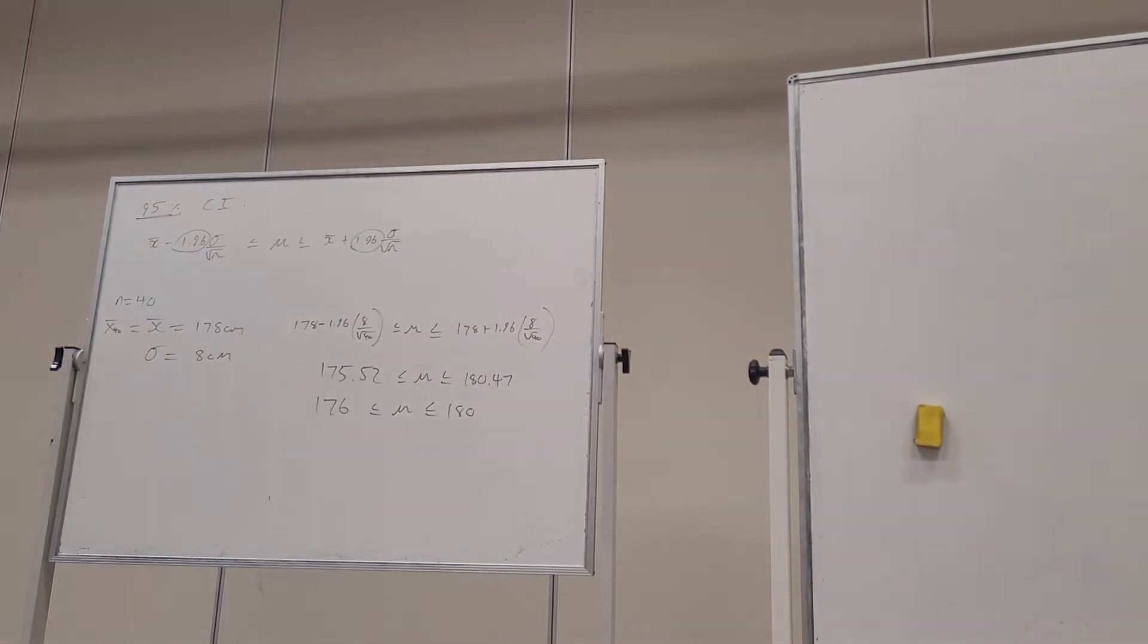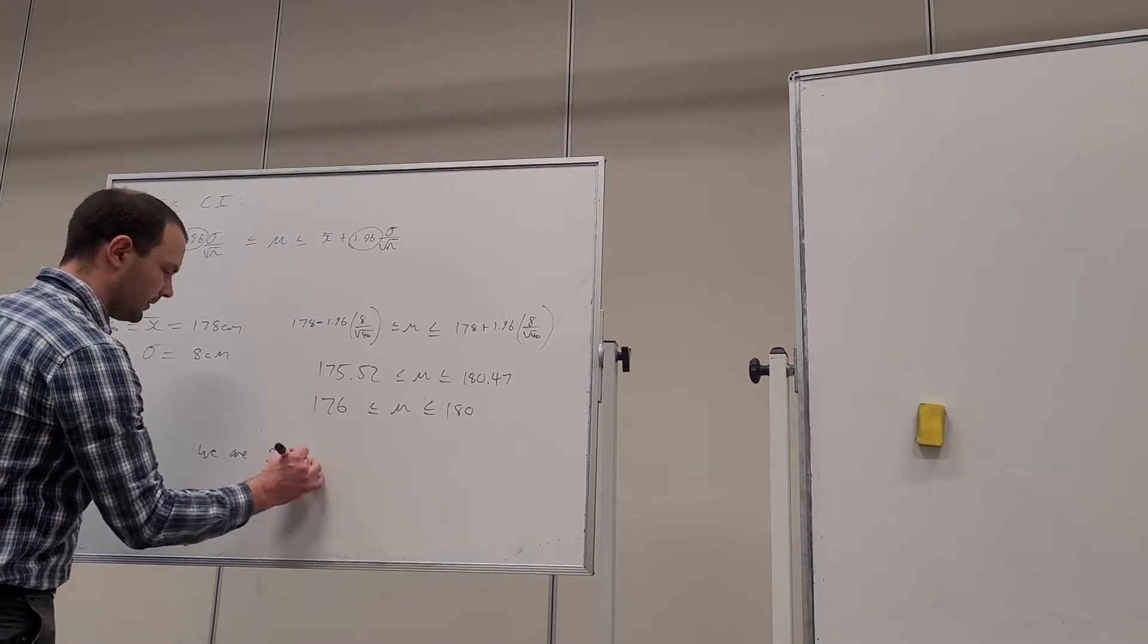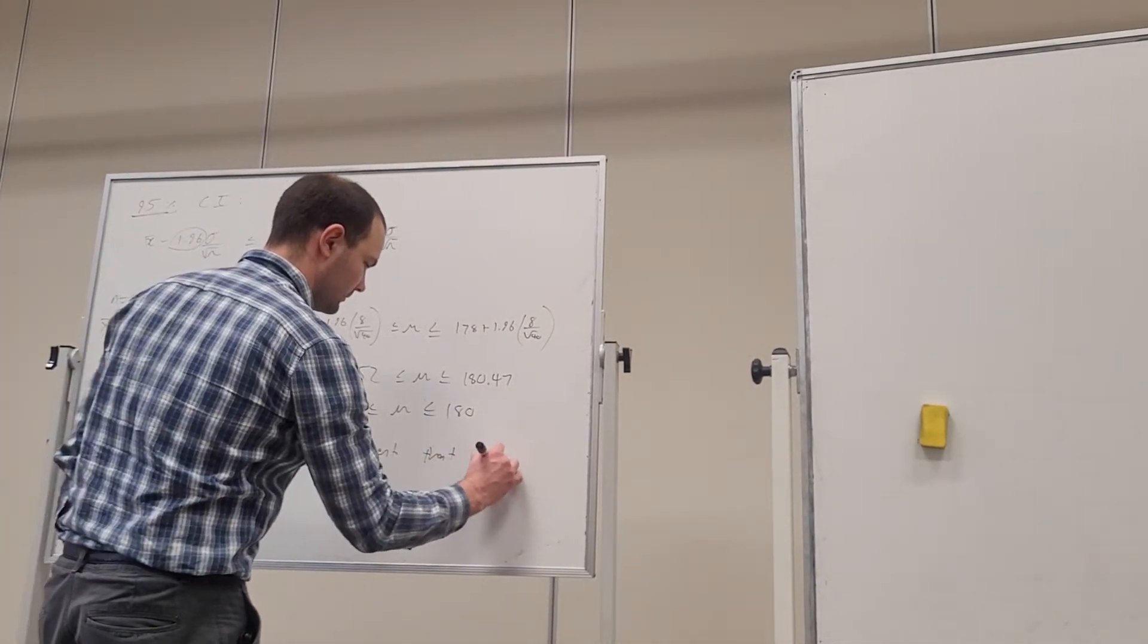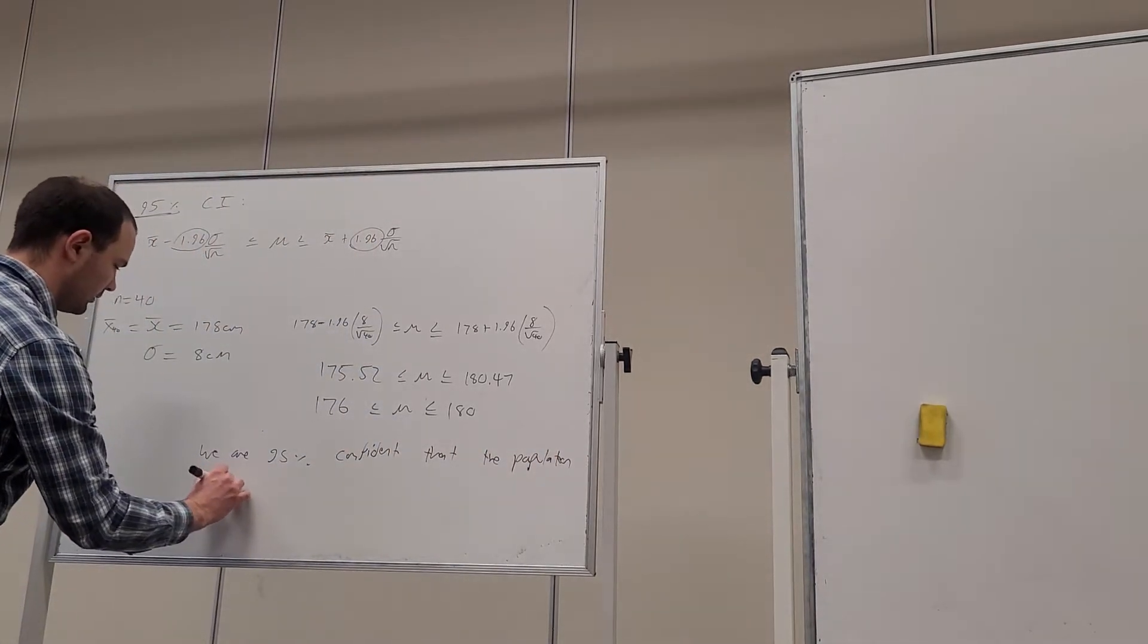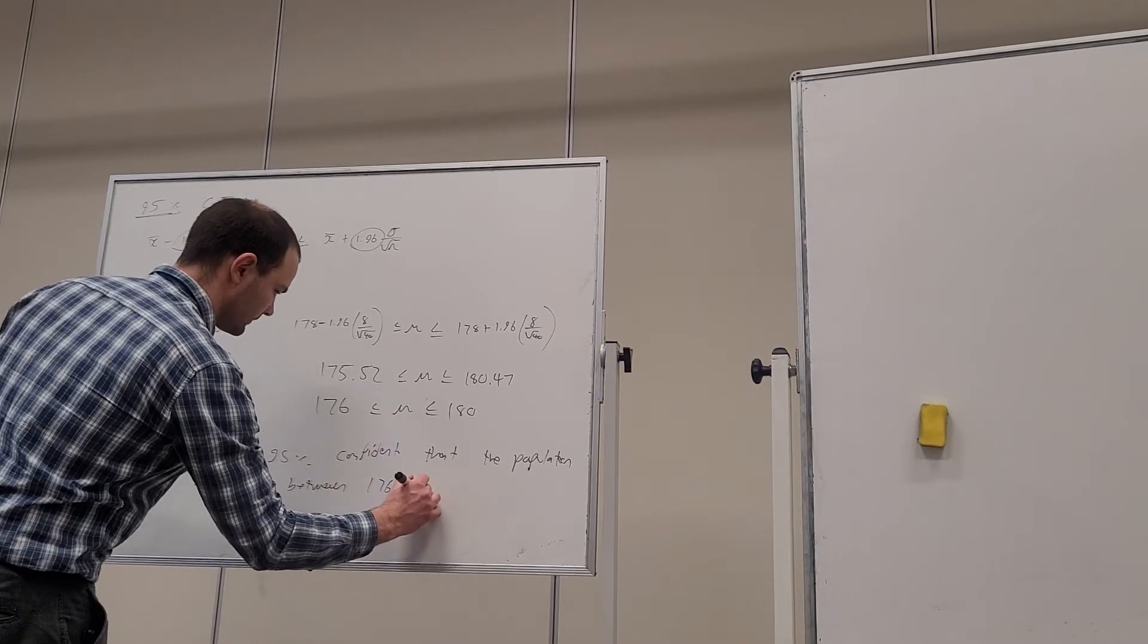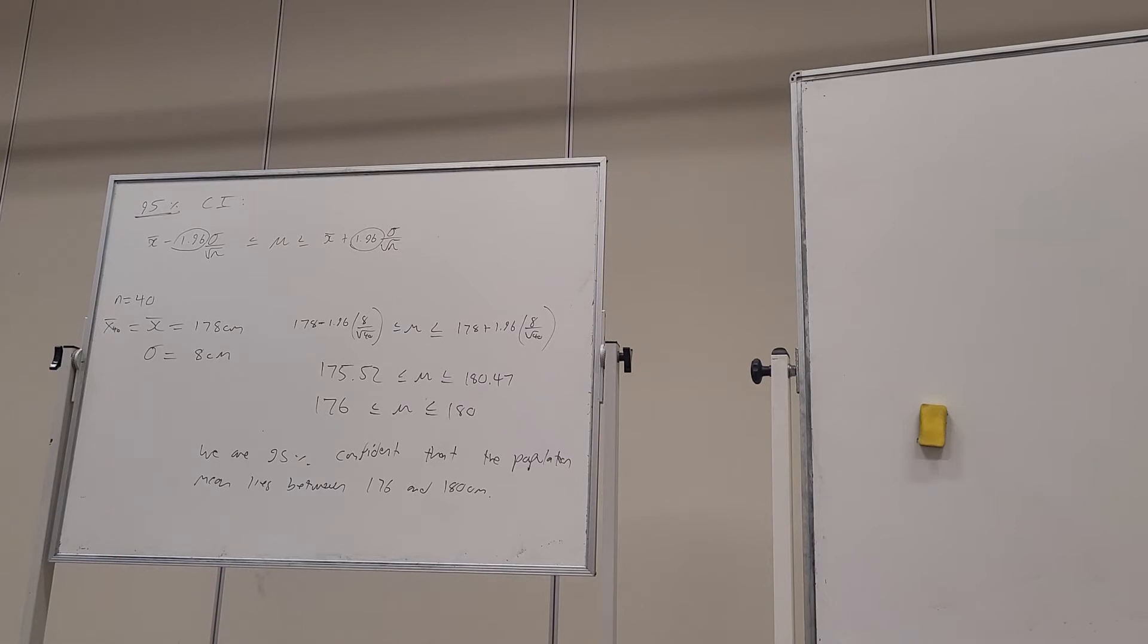Let's turn the page, because there's our calculation. Does it say to interpret? So let's make a statement about that. We are 95% confident that the population mean lies between 176 and 180 centimeters. Let's turn the page. We're at other levels of confidence.